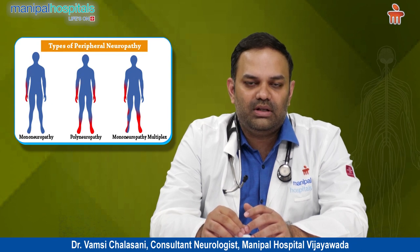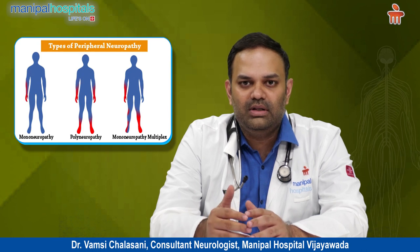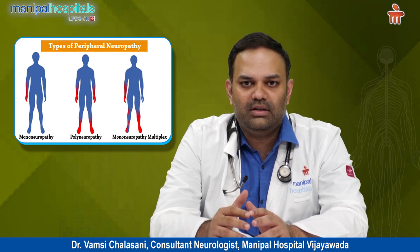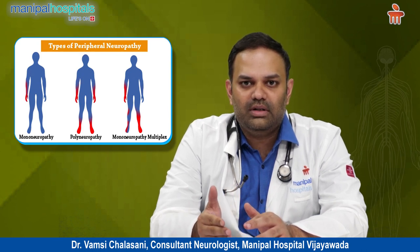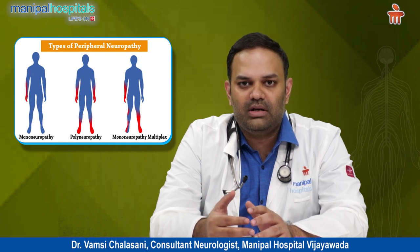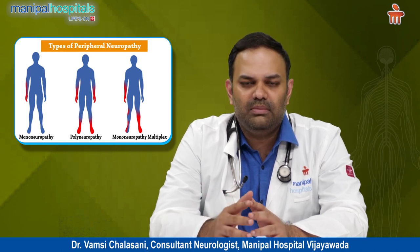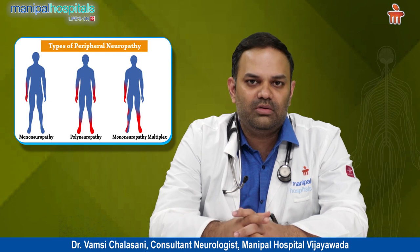The third type is polyneuropathy, where multiple nerves are simultaneously involved. It is usually gradual and slow in onset.